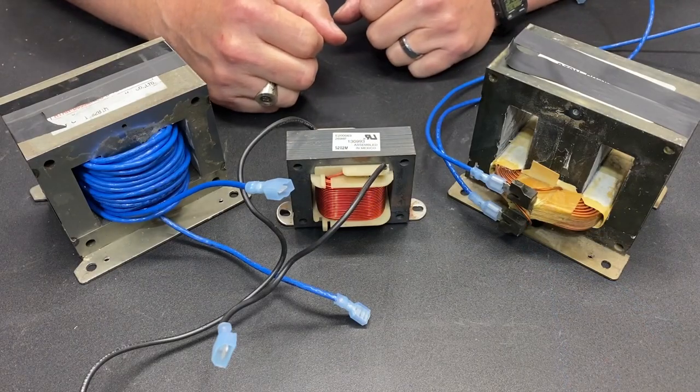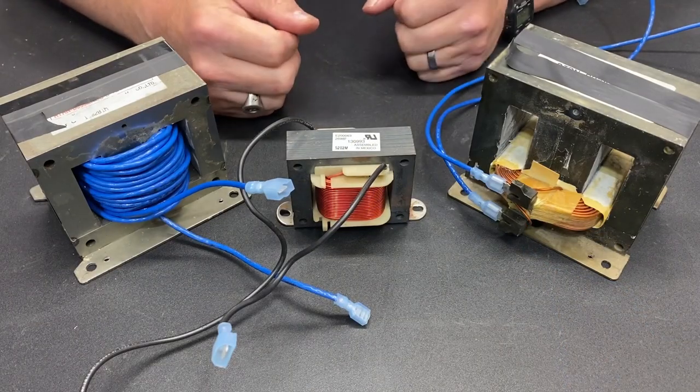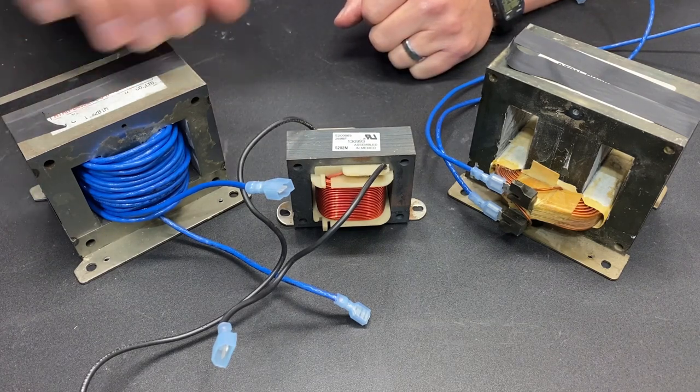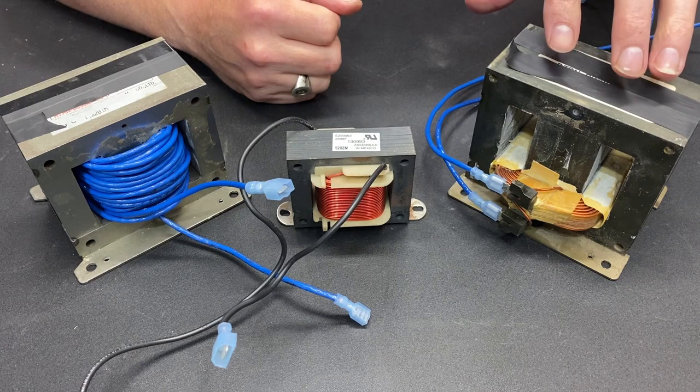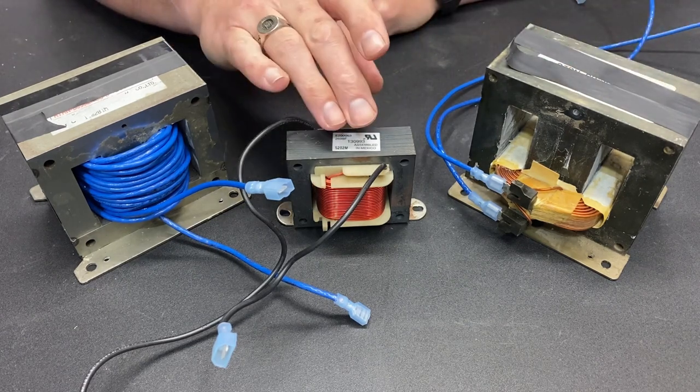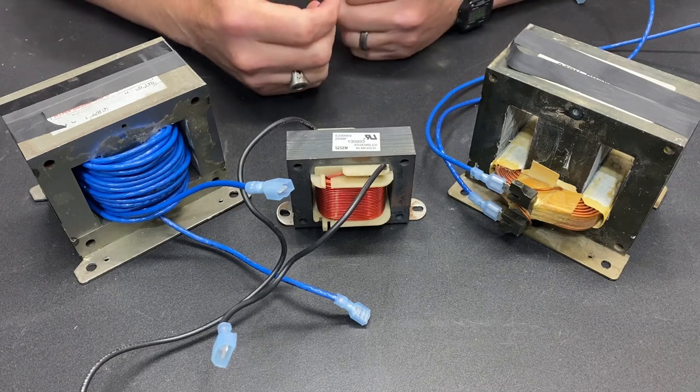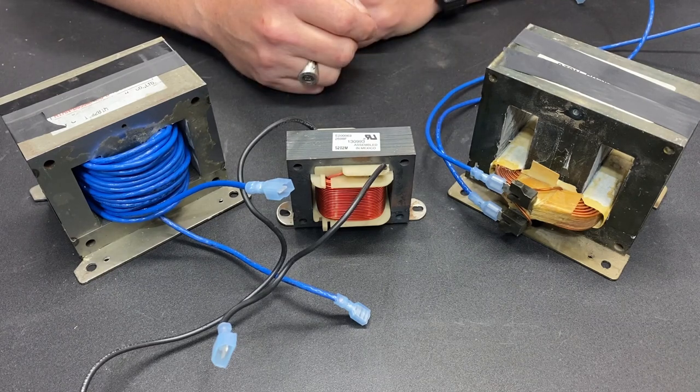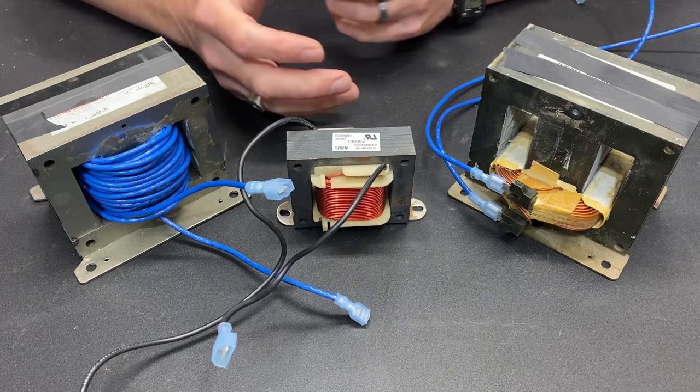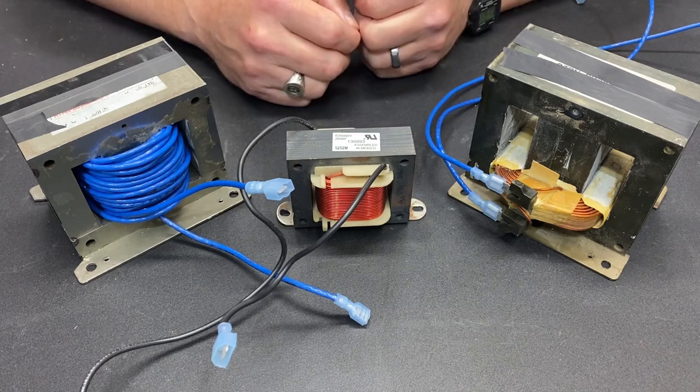So we now have four options. No choke, the DIY stranded wire choke, the transformer coil choke, and of course, the treadmill motor choke designed to filter out power spikes. So how are we going to test these to find out how they work and find out which one is the best?